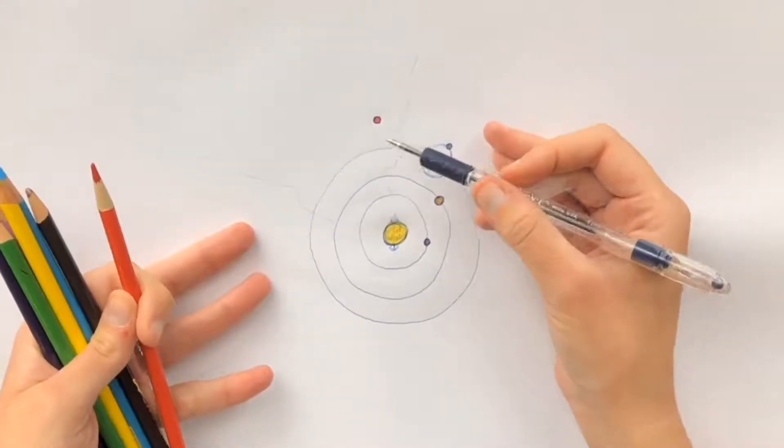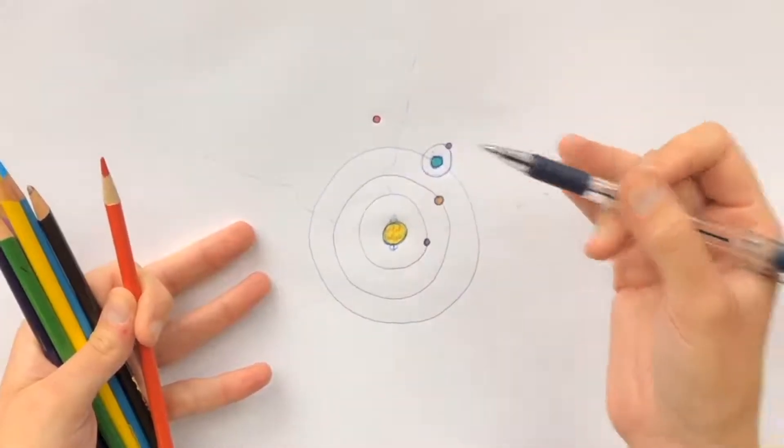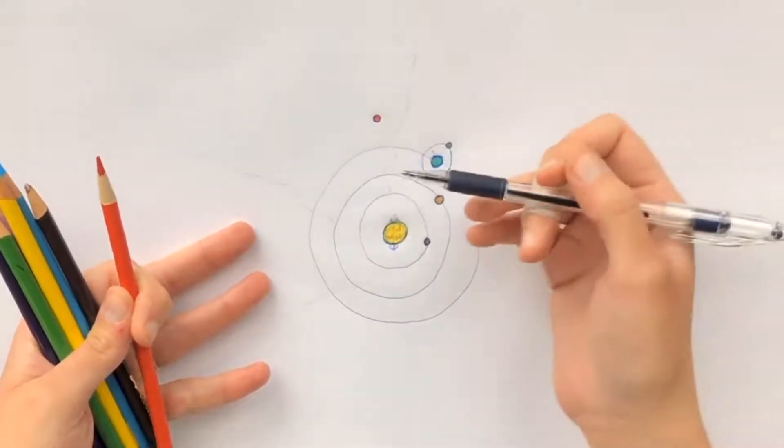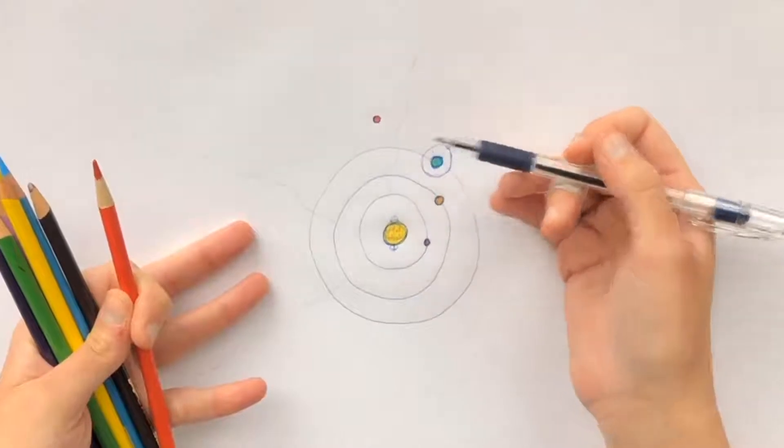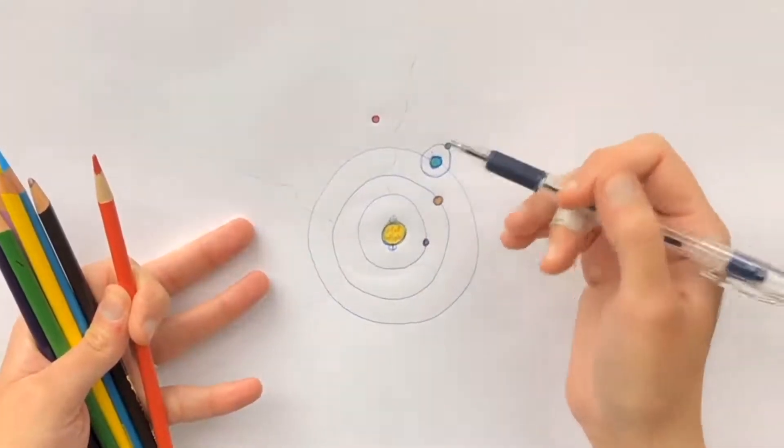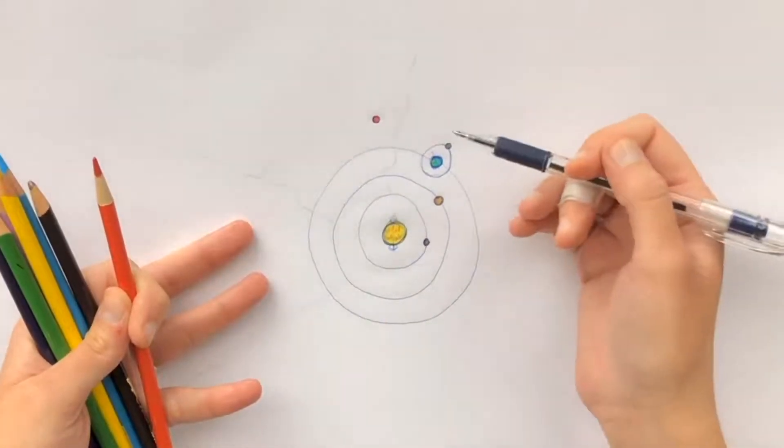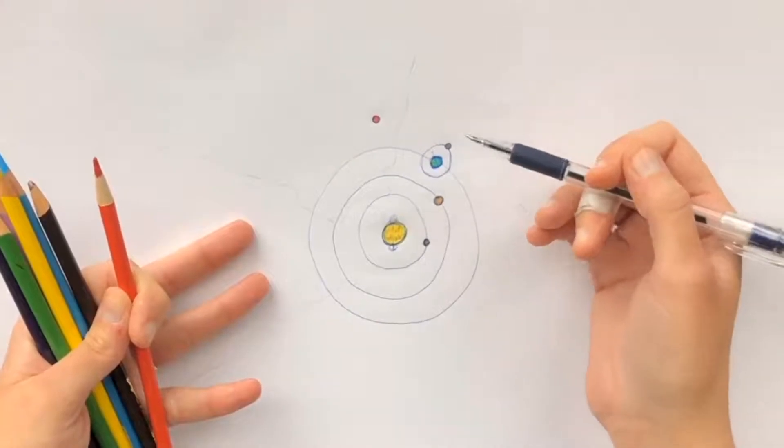Now along with that iron oxide, it's got lots of carbon dioxide, lots of argon, lots of nitrogen. So humans cannot breathe there. We need to bring our own oxygen with us when we go to visit Mars.